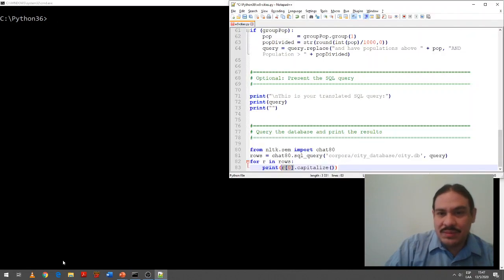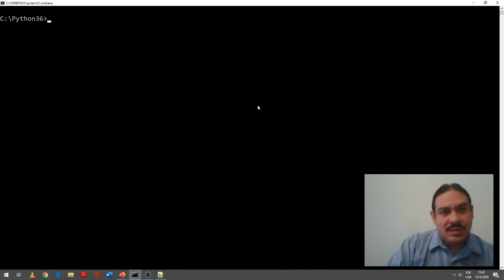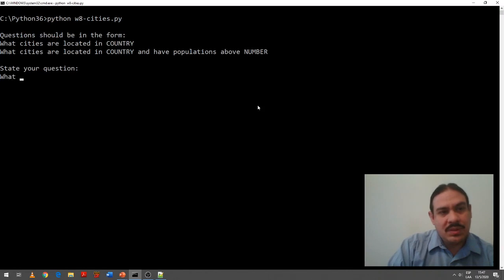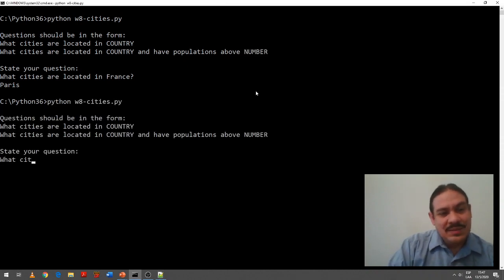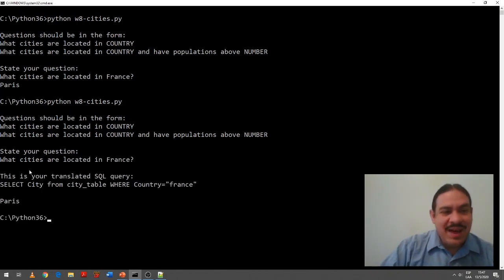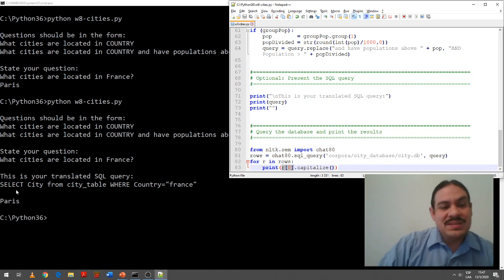So, for example, now that I uncommented this query, like what cities are located in France? Paris. There we go. What cities are located in France? And now it has, this is your translated SQL query. Select city, this corresponds to this, from city table, where the country is equal to France. And then the computer sends this query to a small database it has within the NLTK module, and then returns a number of rows, including the answer Paris.